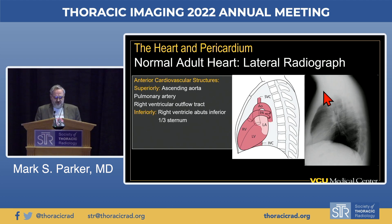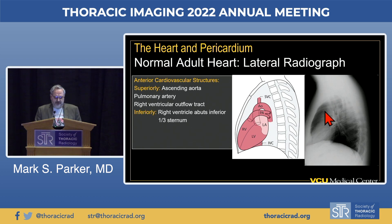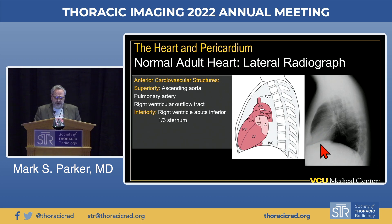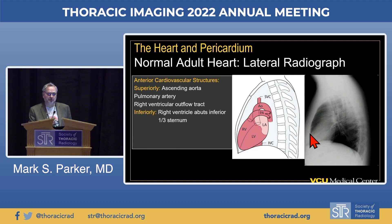Correlating the illustration with the radiograph, the upper border of the anterior cardiovascular structures is created by the ascending and transverse aorta, then the pulmonary outflow tract, pulmonary artery, right ventricular outflow tract, and then the right ventricle itself, which comes all the way down to touch the diaphragm, occupying the inferior one-third of the sternum. Behind the sternum, the upper two-thirds is lucent and the inferior one-third is opaque—this is the normal retrosternal clear space relationship.